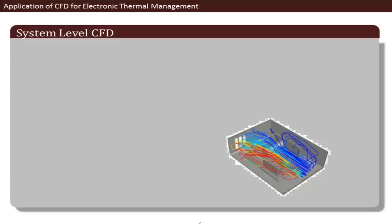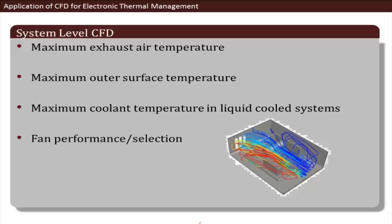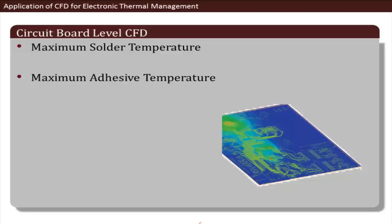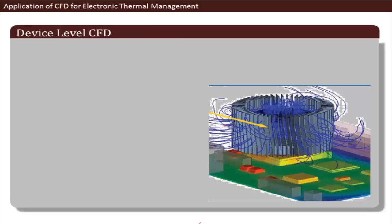When applying CFD to electronic thermal management, there are three levels. At the system level, we deal with the entire cabinet, focusing on maximum exhaust air temperature, outer surface temperature, coolant temperature in liquid-cooled systems, fan selection, and airflow distribution. At the board level, we are interested in maximum solder temperatures, adhesive temperatures, dielectric material performance, PCB temperature distribution, and joule heating in PCB traces.